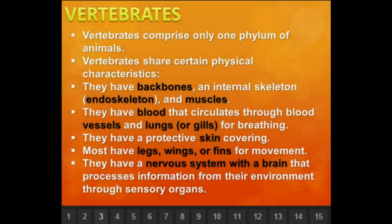Vertebrates are comprised of one phylum of animals. They share certain physical characteristics: they have a backbone and an internal skeleton called an endoskeleton — endo means inside, so inside bones and muscles. They have blood that circulates through vessels, and lungs or gills for breathing. They have protective skin covering, most have legs, wings, or fins to move, and they have a nervous system with a brain that processes information from their environment through sensory organs.